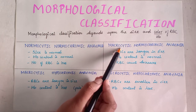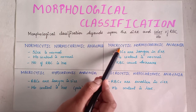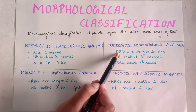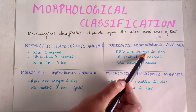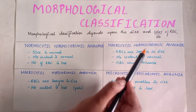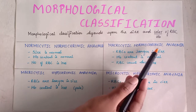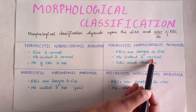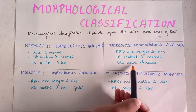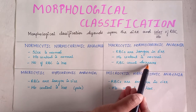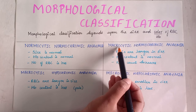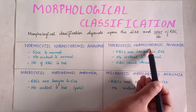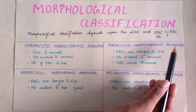Second: macrocytic normochromic anemia. Macrocytic means increased, larger size of RBCs. Normochromic means normal color, that is hemoglobin content is normal, and as usual in anemia, RBC count is less.